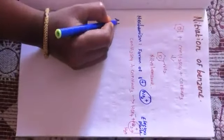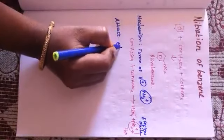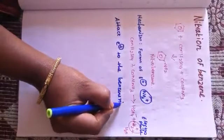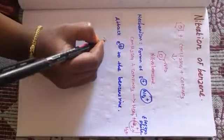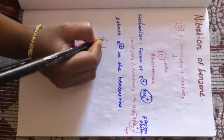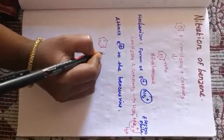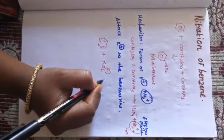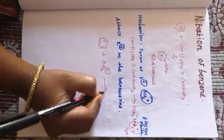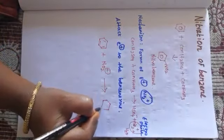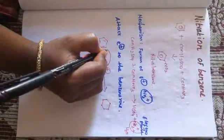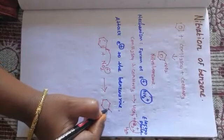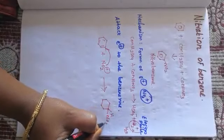The second step is attack of the electrophile on the benzene ring, on the aromatic ring. This NO₂⁺ is called the nitronium ion. Since benzene is an electron-rich compound, it will automatically be attacked, the hydrogen comes out and NO₂ gets bonded.